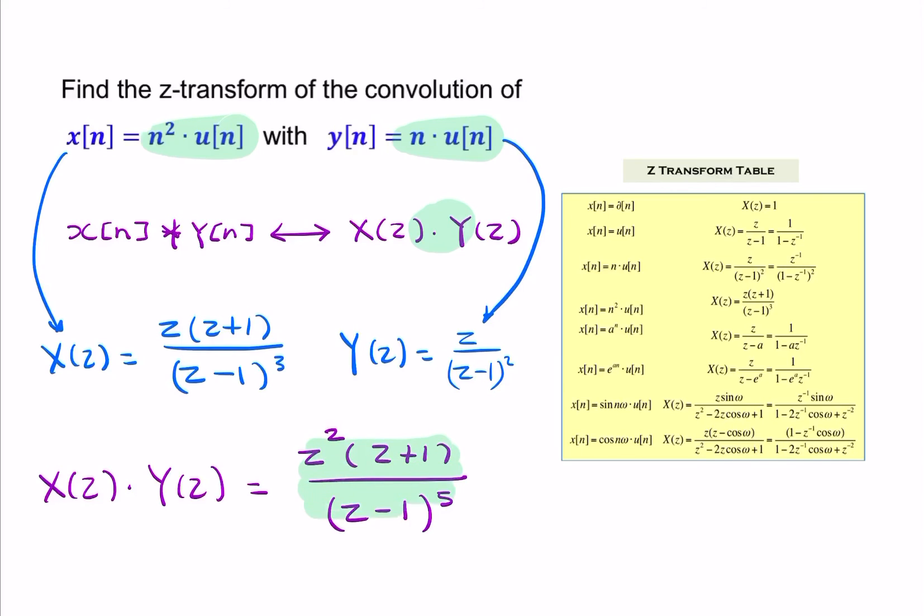And that's my final answer. The question was, what's the Z-transform of the convolution? We could have carried out a discrete-time convolution, but much easier is simply to use the Z-transform table. Find the equivalent expressions in the Z-domain and then multiply them. Here we have our final answer.